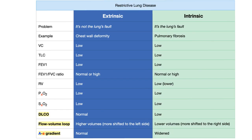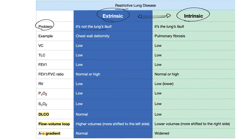Restrictive lung disease can be extrinsic — the problem outside the lung — or intrinsic — the problem in the lung. This is a very important comparison table. Extrinsic example: chest wall deformity like kyphoscoliosis. Intrinsic example: pulmonary fibrosis. Vital capacity is low in both. Total lung capacity is low in both since lungs are restricted from filling. FEV1 is low in both. FEV1/FVC ratio is normal or high in restrictive disease.